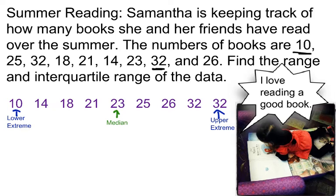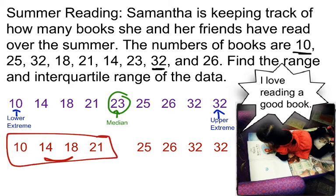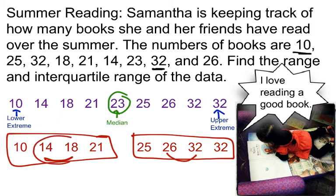Now I can revisit the same data without that median. I have this area here which is my lower quartile — in other words, I'm looking at the bottom half of the numbers. This is my upper half, and I'm going to find my upper quartile. The lower quartile is the median of the lower half, and the upper quartile is the median of the upper half set of data.